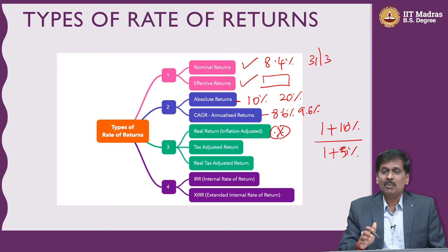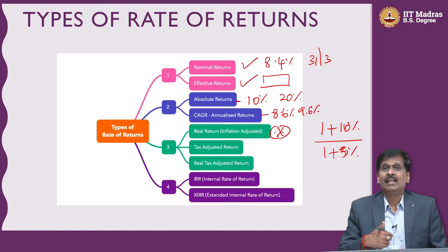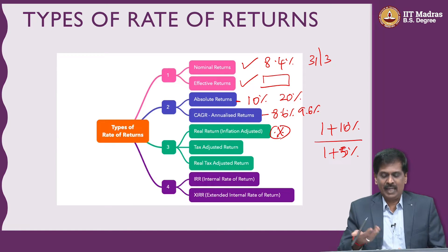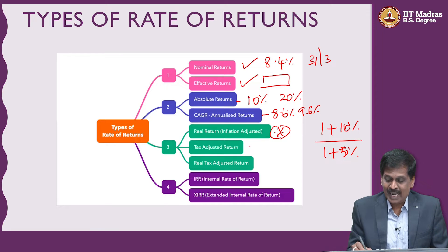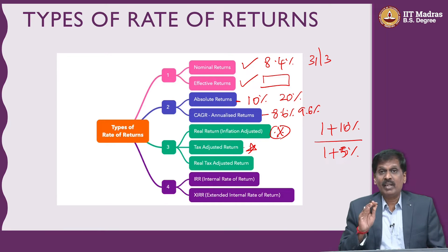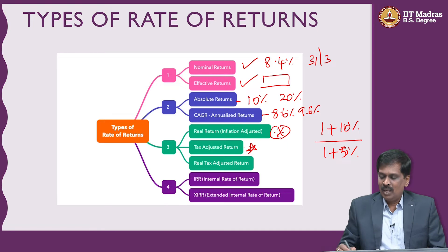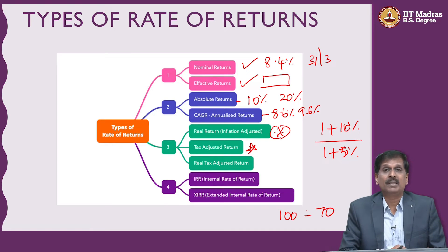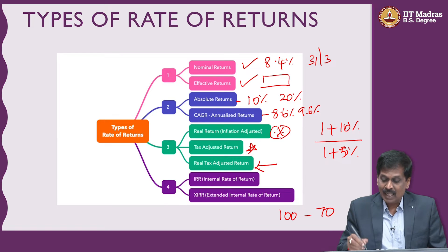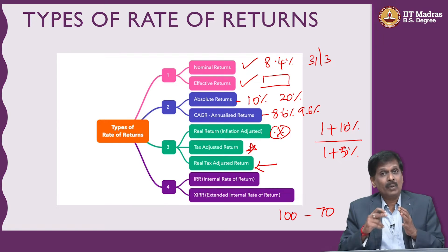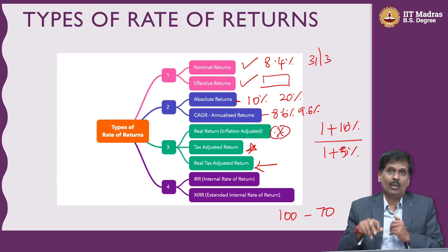The next one I am going to talk about is tax-adjusted return. Only the first 5 to 7 lakhs of income attracts no tax; beyond that you pay taxes. So what is important is your tax-adjusted return. If you are in the 30 percent tax slab and you are going to get 100 rupees, you will actually be getting only 70 rupees, not 100 rupees. The next one is real tax-adjusted rate of return — that means you take into account not only inflation but also taxes.